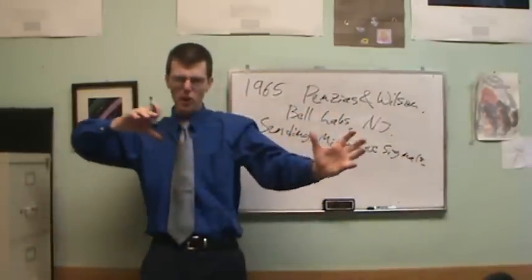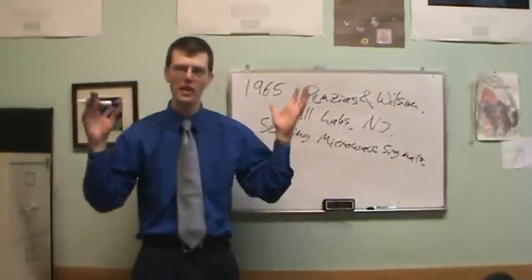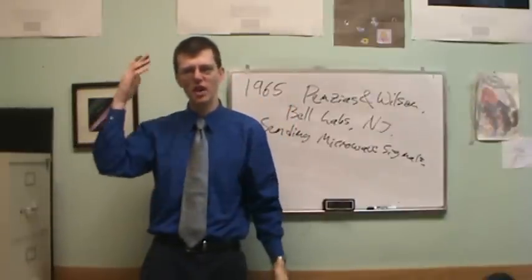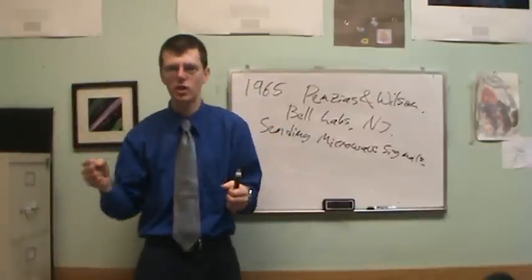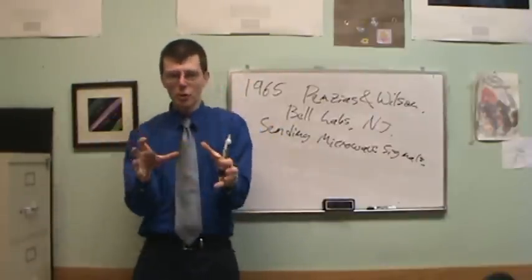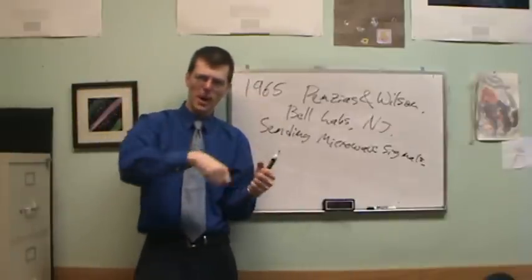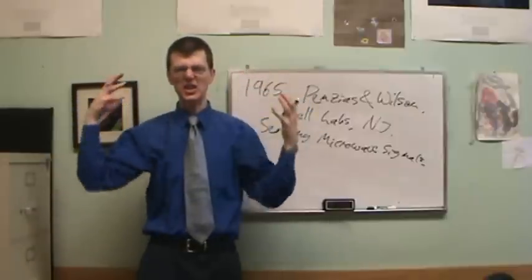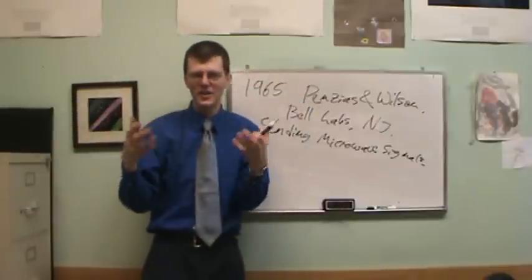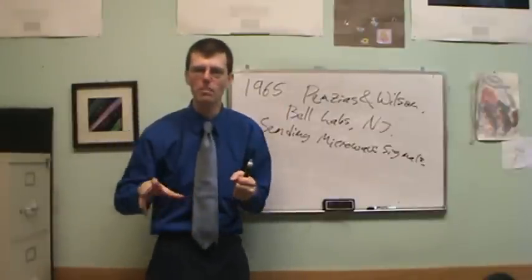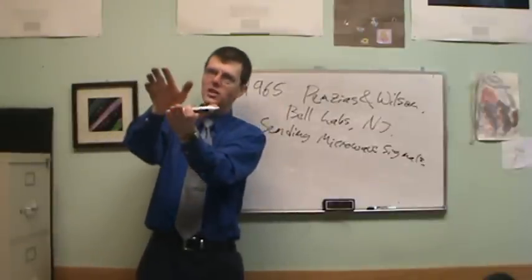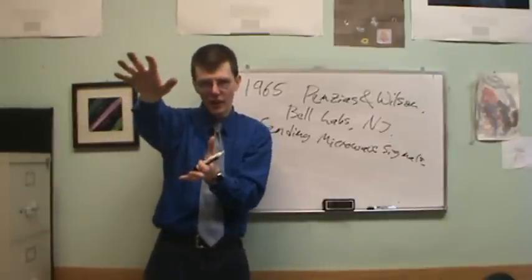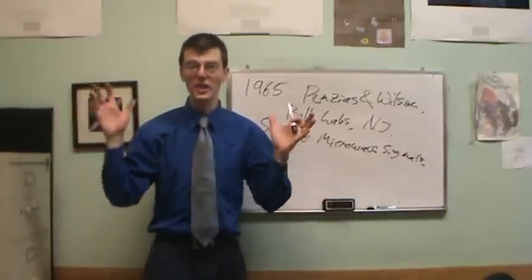They have this big metal horn shaped antenna. They're trying to send signals back and forth and they keep getting this horrible interference, this nasty, awful, ridiculous interference. So they go through, they tear out all the electronics, which back in those days is radio tubes, and they put new ones in and they can't get it to work. They scrape out the pigeon droppings. They can't figure out why there's this horrible noise filling up their antenna so they can't get their signals across, until finally one of them goes up on the roof and realizes the antenna is pointing slightly up at the sky. He takes this horn shaped antenna and points it down at the earth. And the noise goes away.